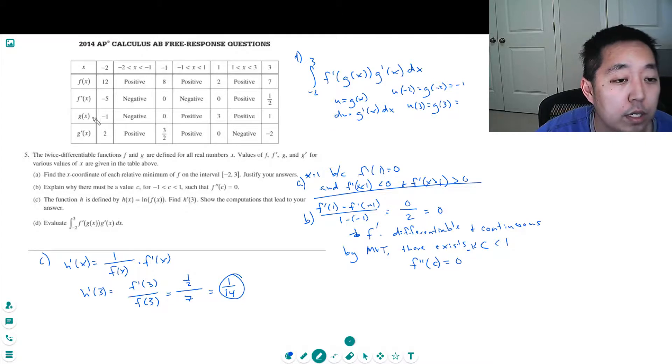So this becomes the integral from negative 1 to positive 1 of f prime of u du.